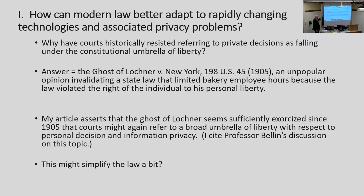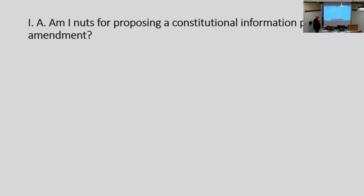My article asserts — and I grabbed this idea from Professor Bellin — that the ghost of Lochner seems sufficiently exercised since 1905. Maybe to simplify the law, we could again refer to liberty in a broad sense, which the dissent in Dobbs v. Jackson was kind of pushing in that direction. Freedom, liberty — an overarching principle. What does it mean to live in a free society? That could be a starting point before getting into more specific laws.